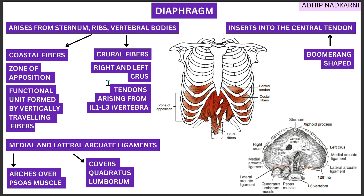Apart from costal and crural fibers, we also have medial and lateral arcuate ligaments, visible here as small pink structures. The medial arcuate ligament is closer to the vertebral bodies and arches over the psoas major muscle. The lateral arcuate ligament is on the outer side and arches over the quadratus lumborum (QL). Those are the ligaments and attachment points of the diaphragm.